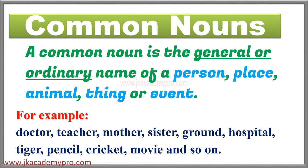place, animal, thing or event. For example: doctor, teacher, mother, sister, ground, hospital, tiger, pencil, cricket, movie, and so on. They are all ordinary names. It can be the name for any doctor, any teacher, any ground, any hospital, any animal. So the general names that we give are called common nouns.